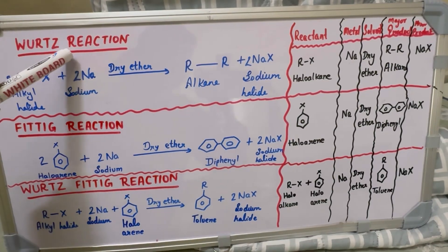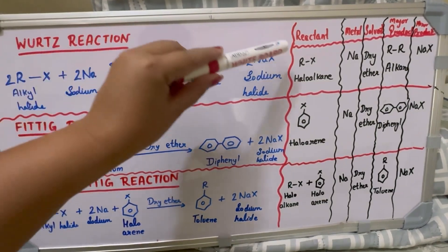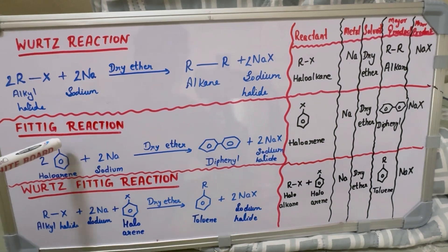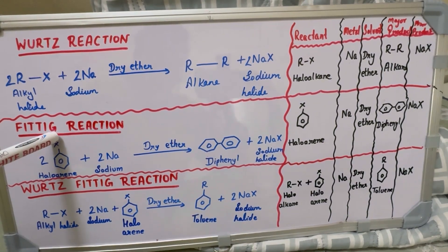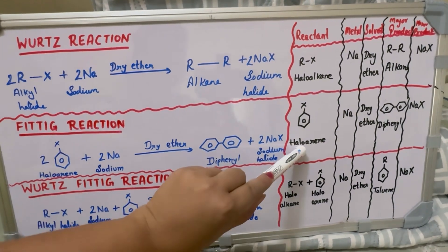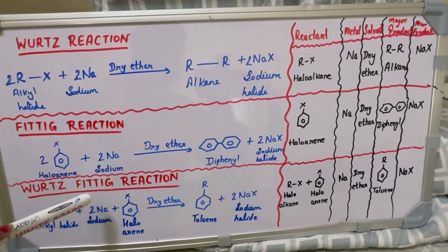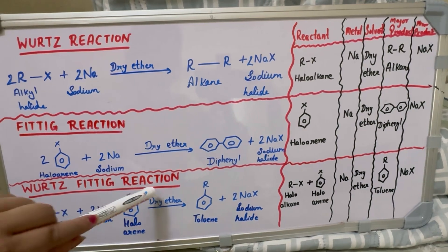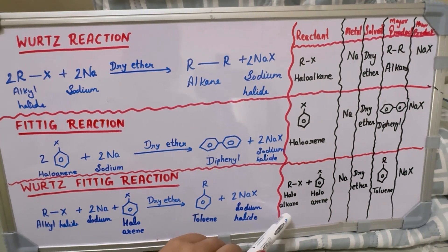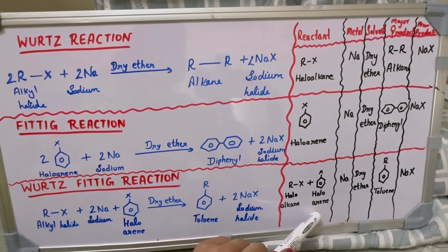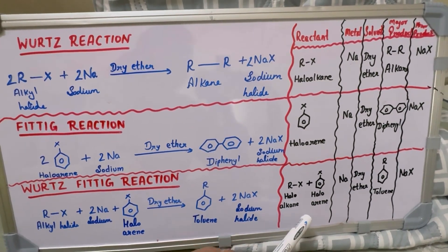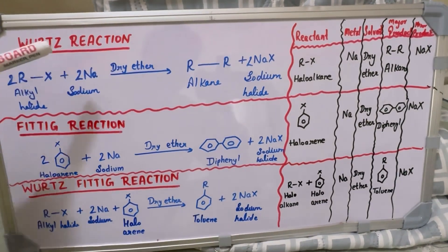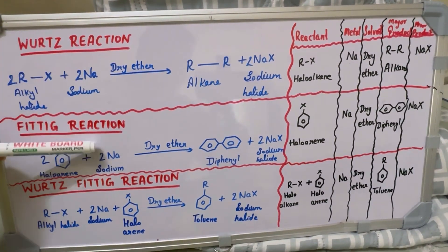In the Wurtz reaction, the reactant haloalkane is used. In the Fittig reaction, the reactant haloarene is used. And in the Wurtz-Fittig reaction, both haloalkane and haloarene are used as reactants.